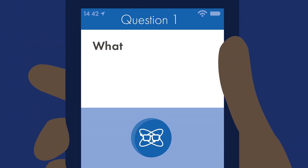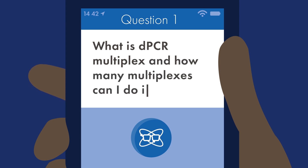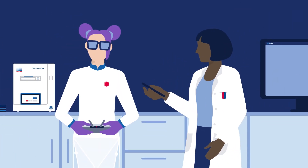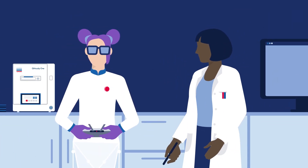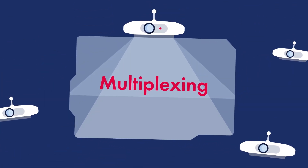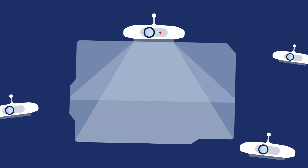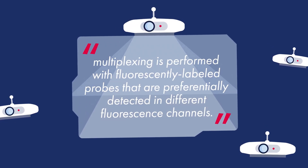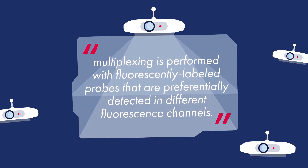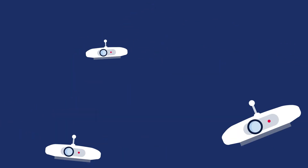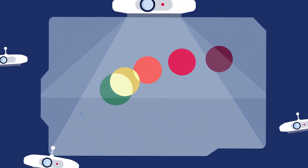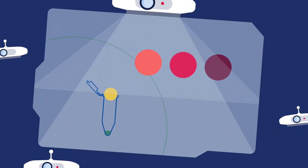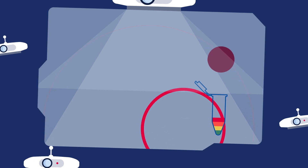Question 1: What is dPCR multiplex and how many multiplexes can I do in one tube? dPCR multiplexing is the ability to precisely quantify more than one target in a single tube. According to the DMIKI guidelines updated in 2020, multiplexing is performed with fluorescently labelled probes that are preferentially detected in different fluorescence channels. With the KaiaQiD, you may be able to quantify up to five targets, but screen for more than that.